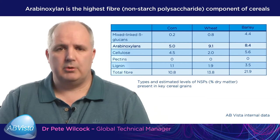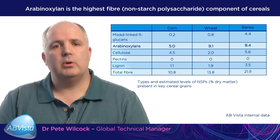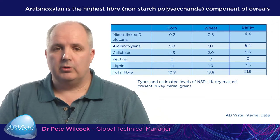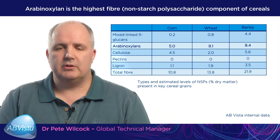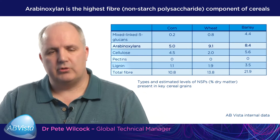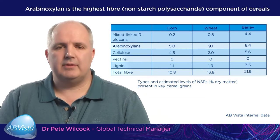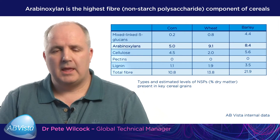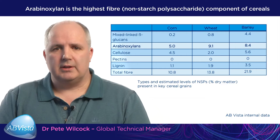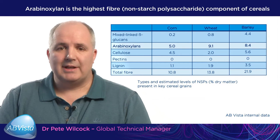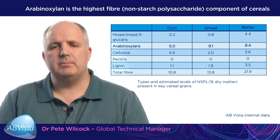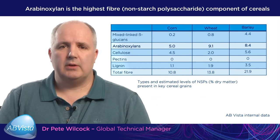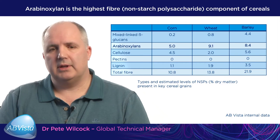There are two components of the arabinoxylans: the soluble component and the insoluble component. The soluble component increases the viscosity of the digesta in the upper tract, which can have a negative impact on nutrient digestibility and utilization. The insoluble arabinoxylans form part of the structure of the plant cell wall, impeding the endogenous enzymes of the animal from breaking down the starch and protein within that cell wall.